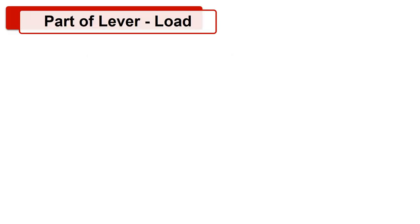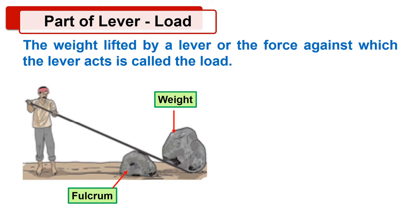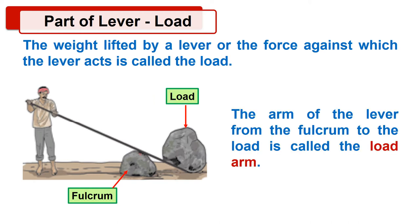Now we will see the second part of a lever, that is load. The weight lifted by a lever or the force against which the lever acts is called load. The arm of the lever from the fulcrum to the load is called load arm.